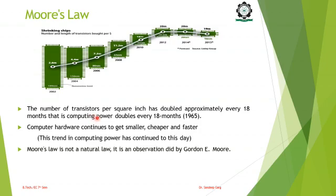Due to the increase in density of the chip, the number of transistors doubles, which reduces power consumption, area, and delay of the device, making the chip faster. Computer hardware continues to get smaller, cheaper, and faster due to this increase in components every year. Moore's law is not a natural law; it is an observation made by Gordon Moore by studying previous technologies.